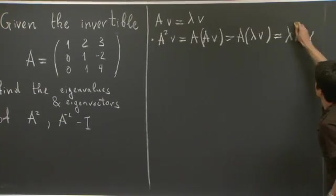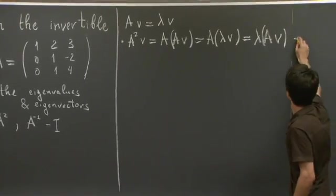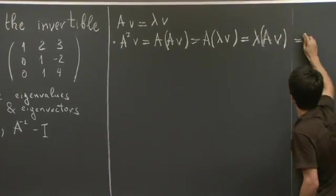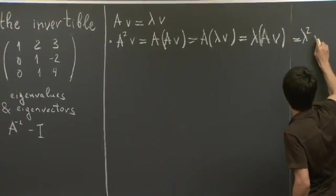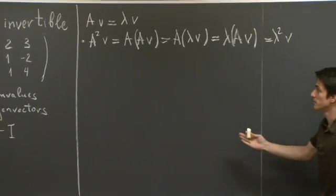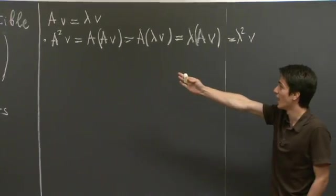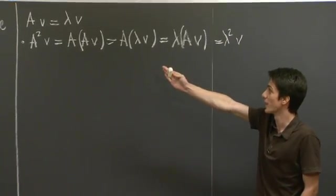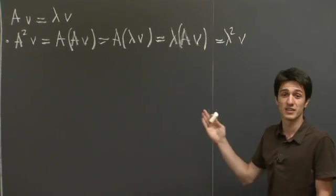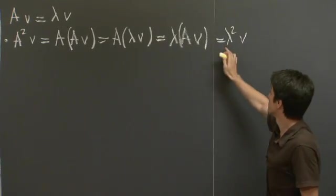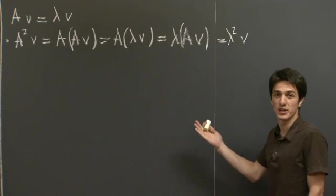And lambda A V is, when we plug in A V lambda V, is just lambda squared V. So what we've found out is that if V is an eigenvector for A, then it's also an eigenvector for A squared, just that the eigenvalue is the eigenvalue squared.